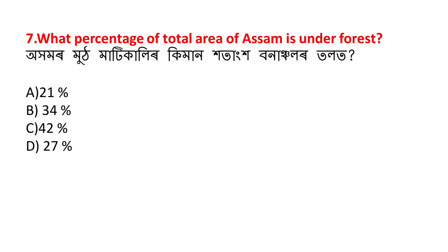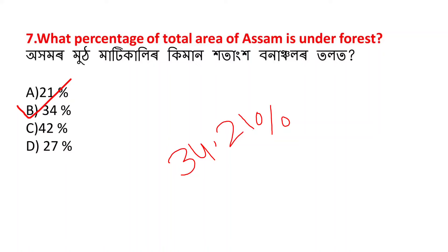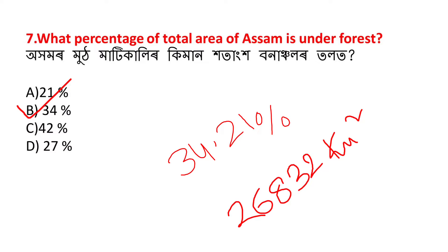A number to hudhahattro. Question number 7: What percentage of the total area of Assam is under forest? Ohamor mout mati kaalir kimaan hatang hat bannan chala se? This question is very very important. The answer is B - 34%. The total forest cover is 372,211 hectares and the total forest area is 27,322 sq km.